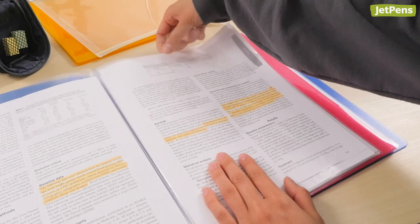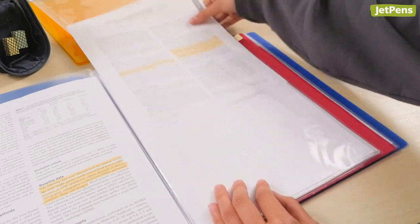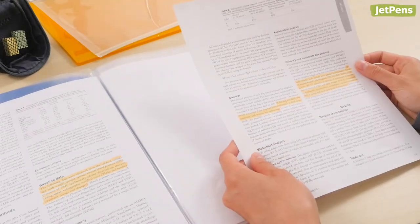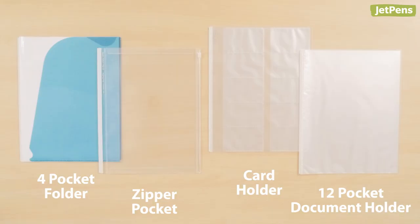Removing documents from the binder is effortless, so it's simple to take out the notes you need for each class. Four types of files are available: a four pocket folder, a zipper pocket, a card holder, and a 12 pocket document holder.